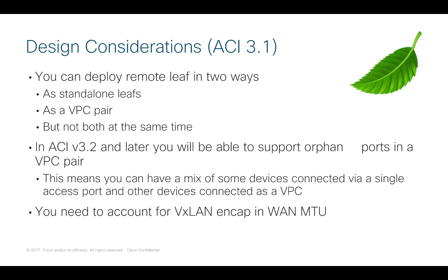When deploying the remote physical leaves, you have two approaches at the remote location. You can deploy them as a pair of standalone leaves, or alternatively as a VPC pair, but you can't do both at the same time. In ACI version 3.2 and later, we do add the ability to have orphaned ports, so you can deploy as a VPC pair where some things are connected over a VPC and some things over a single access port without any problem. Finally, because we're using VXLAN between the leafs in the remote location, we need to account for that extra encapsulation overhead, so MTU will likely need to be adjusted across the WAN.